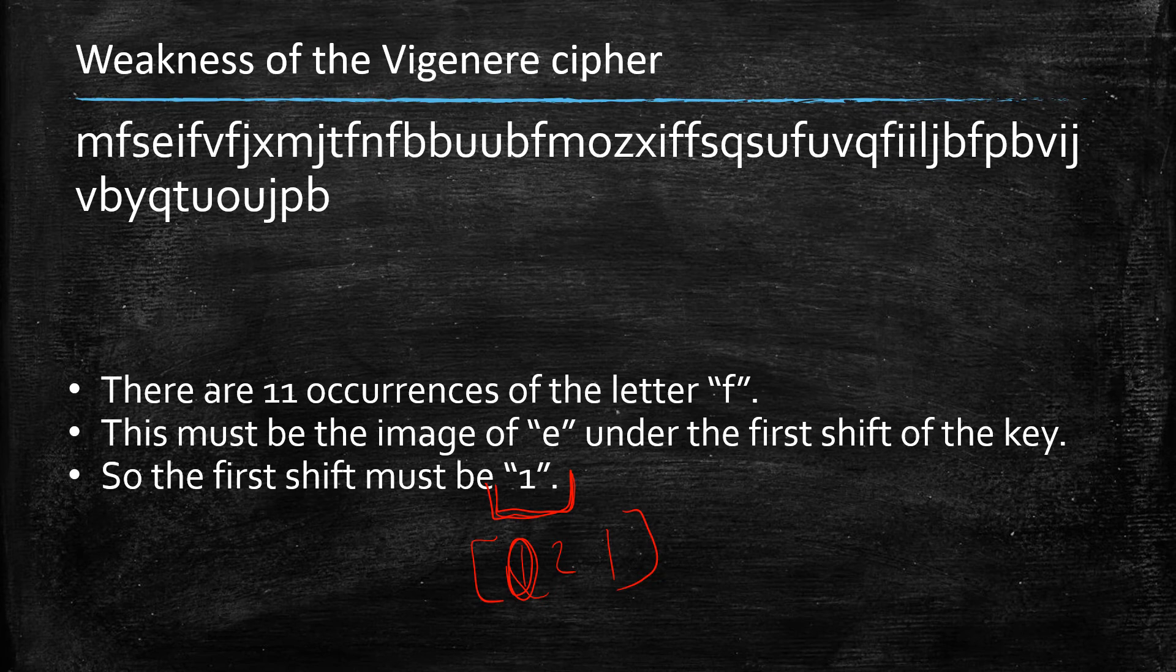So what it means is we found one of the shifts of the key, and you can repeat that operation for the second and the third by creating a different subset of the ciphertext consisting of every second letter and every third letter. So the message here is that we still have something intrinsic about those substitution ciphers that is insecure.